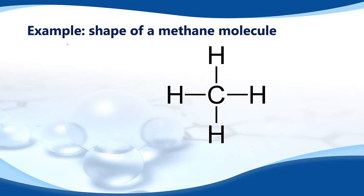In this example we'll use VSEPR theory to predict the shape of a methane molecule. We draw the Lewis structure for a methane molecule — this is a 2D representation, but methane and all molecules exist in 3D.